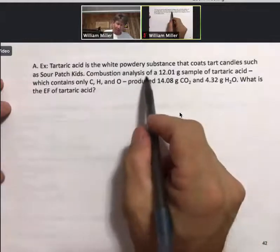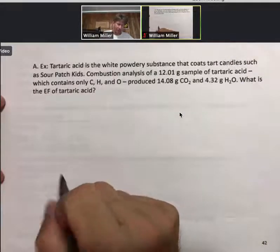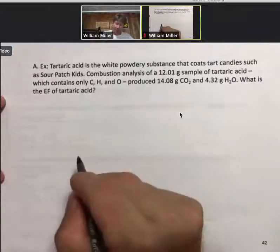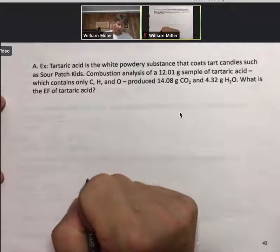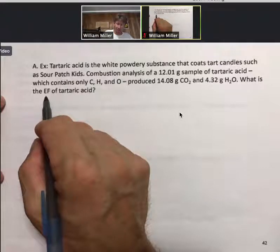It says, combustion analysis of a 12.01 gram sample of tartaric acid, which contains only carbon, hydrogen, and oxygen, produced 14.08 grams of carbon dioxide and 4.32 grams of H2O. What is the empirical formula of tartaric acid?